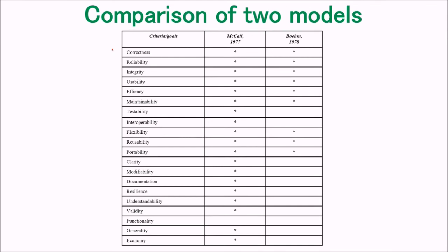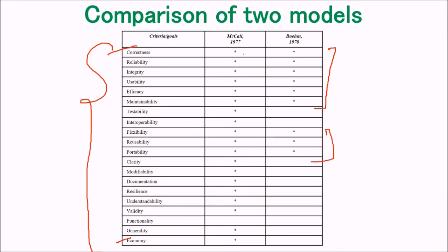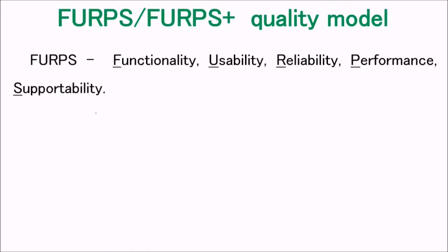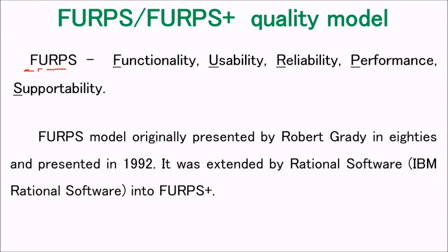Comparing McCall and Boehm: both cover quality factors from correctness through economy, with Boehm giving thrust to certain areas and McCall covering most, just leaving out functionality. The FURPS model stands for Functionality, Usability, Reliability, Performance, and Supportability. It was originally presented by Robert Grady in the 1980s and formally presented in 1992, after which Rational Software extended it to FURPS Plus.